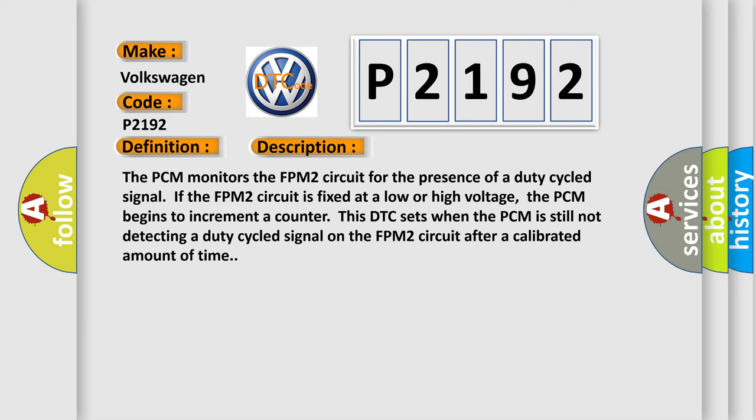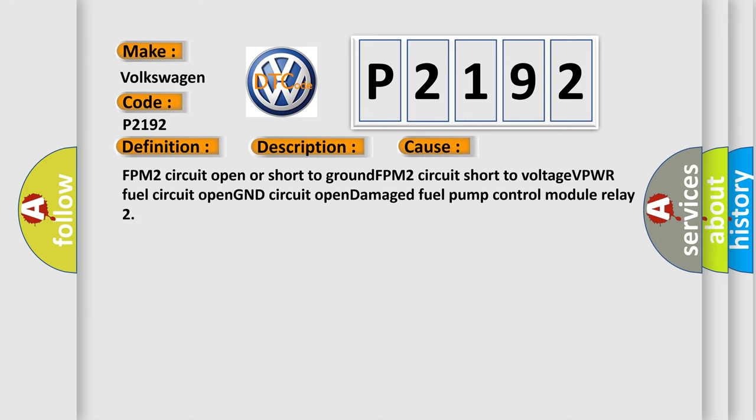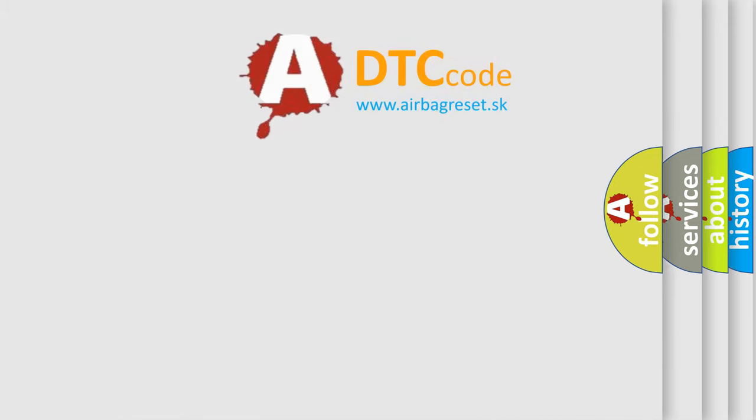This diagnostic error occurs most often in these cases: FPM2 circuit open or short to ground, FPM2 circuit short to voltage, VPWR fuel circuit open, GND circuit open, damaged fuel pump control module relay 2. The Airbag Reset website aims to provide information in 52 languages.